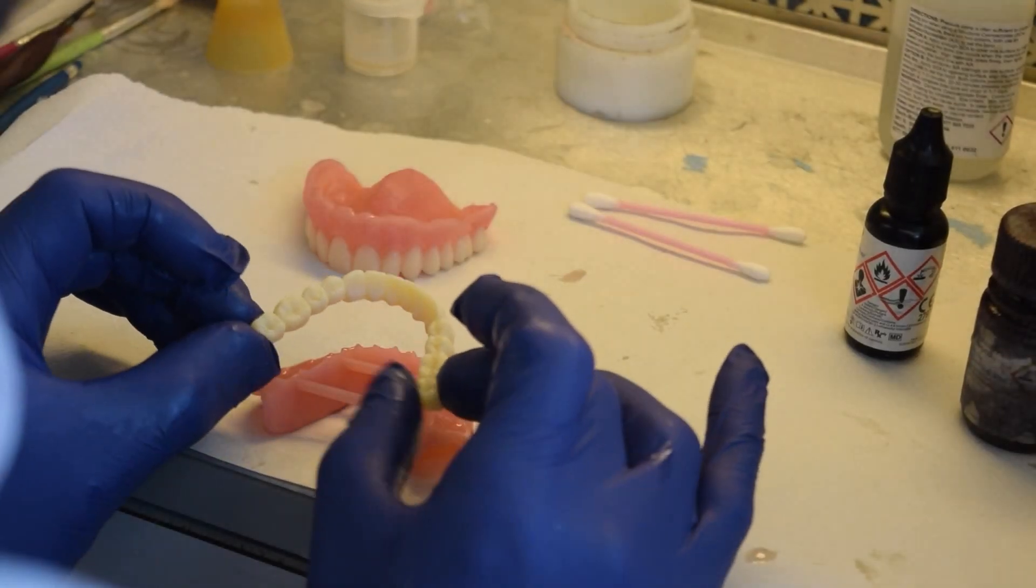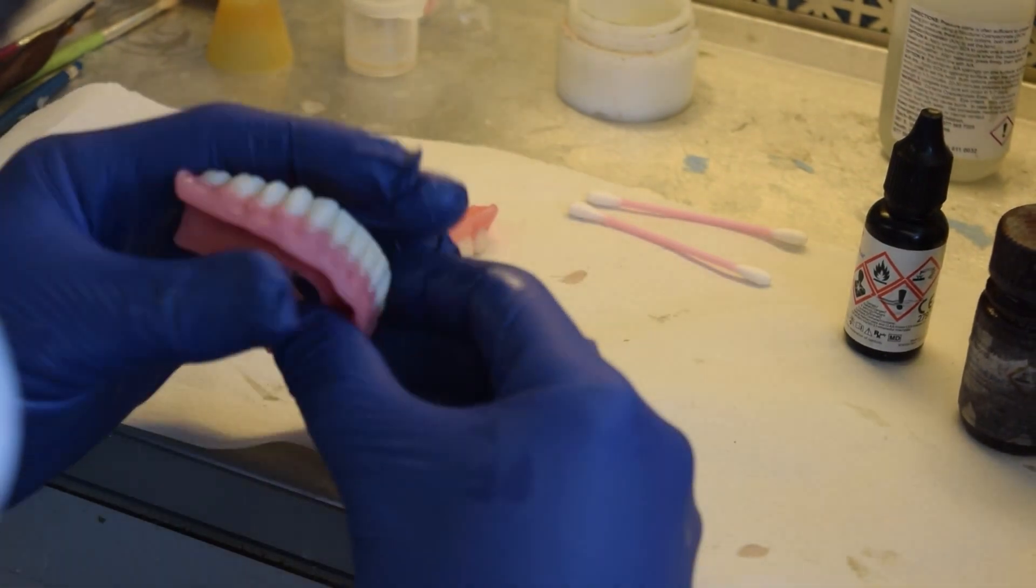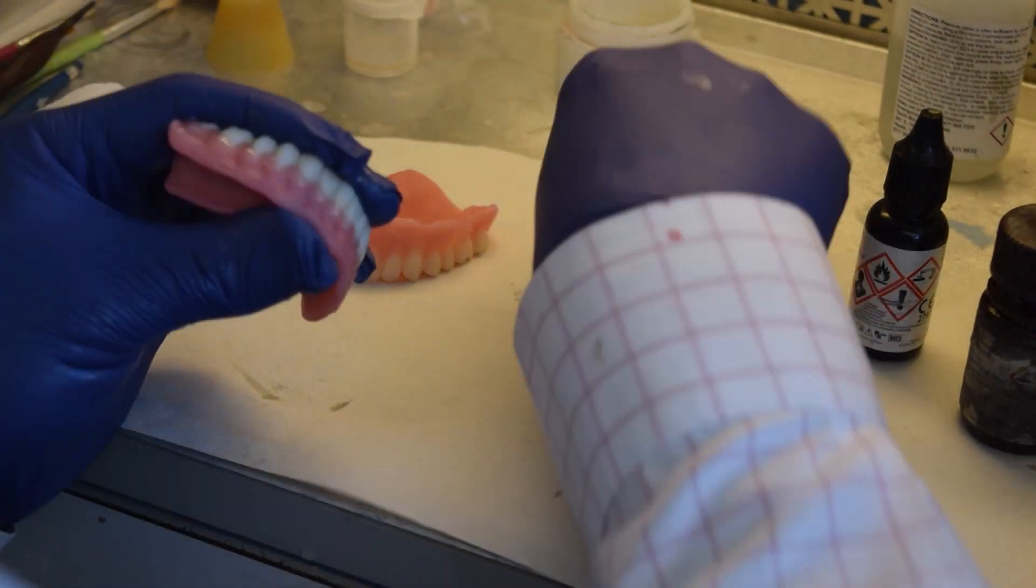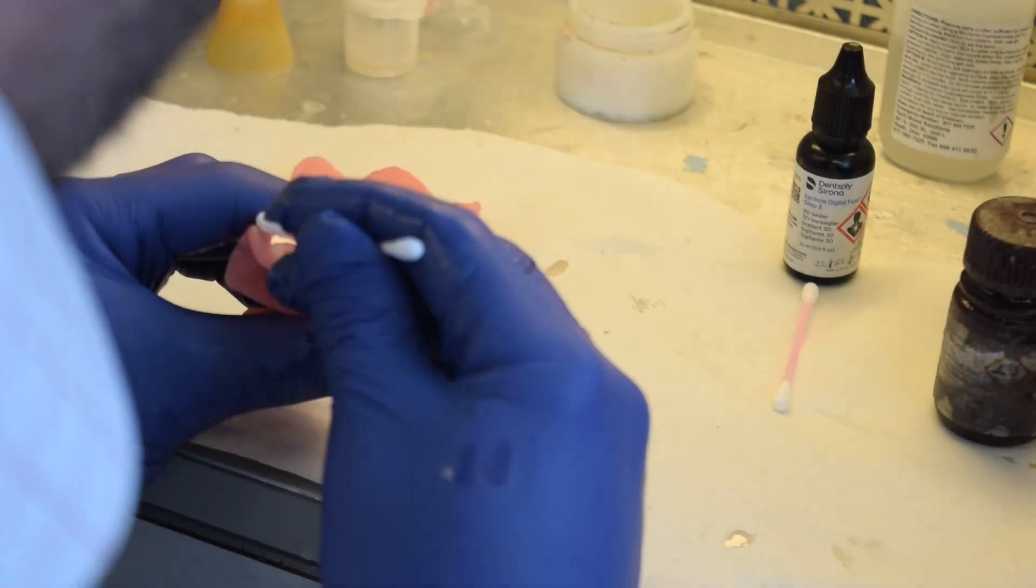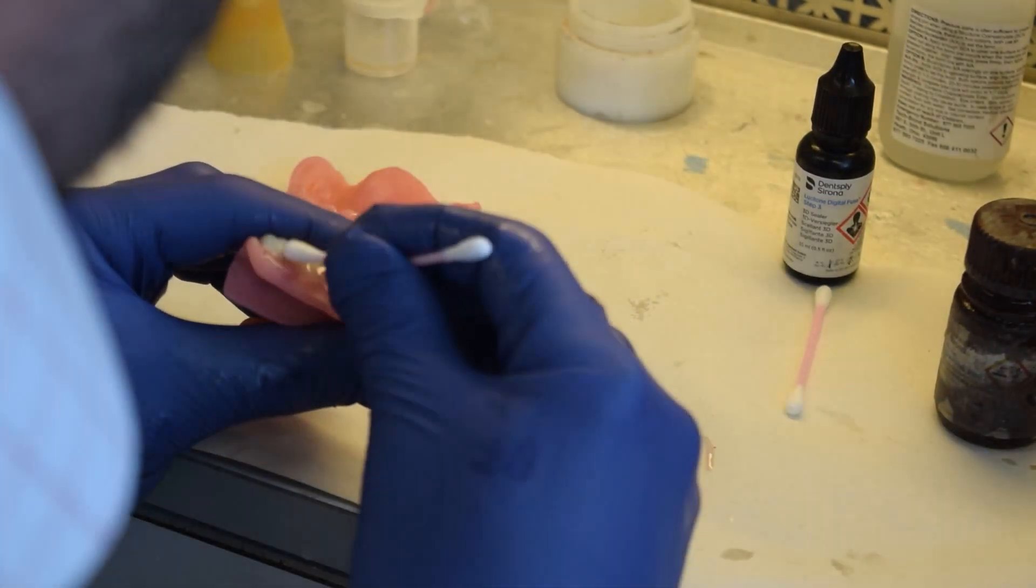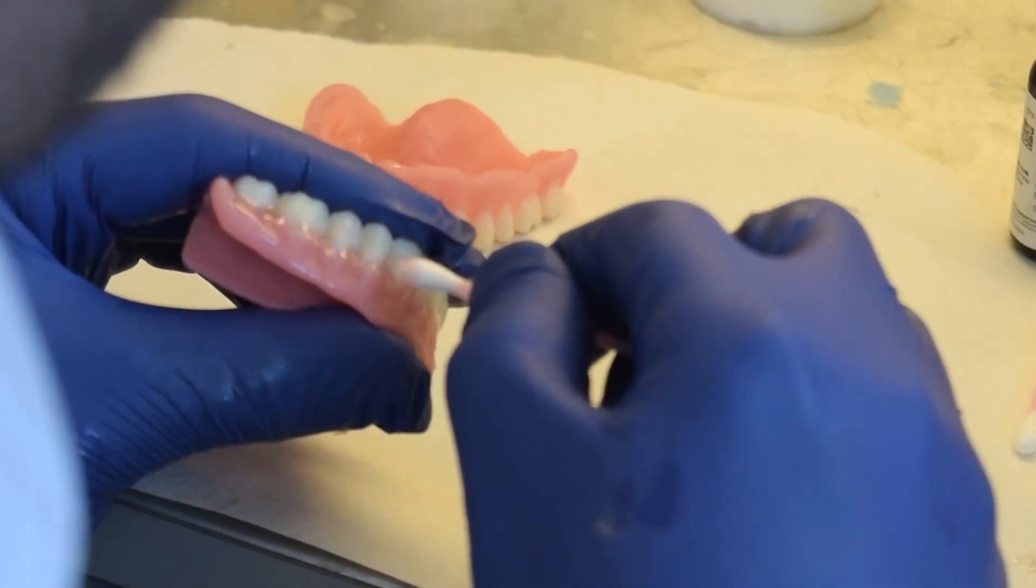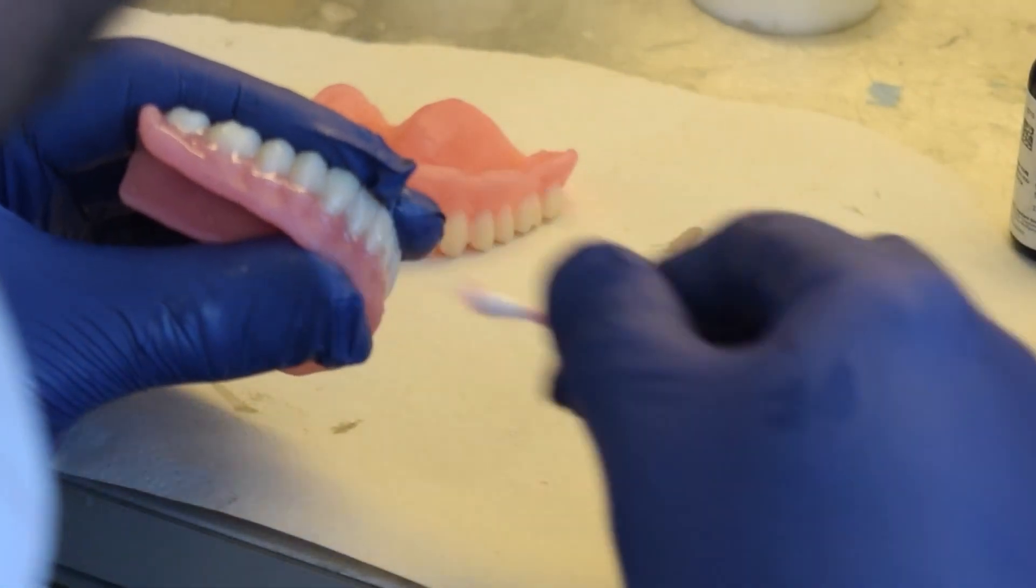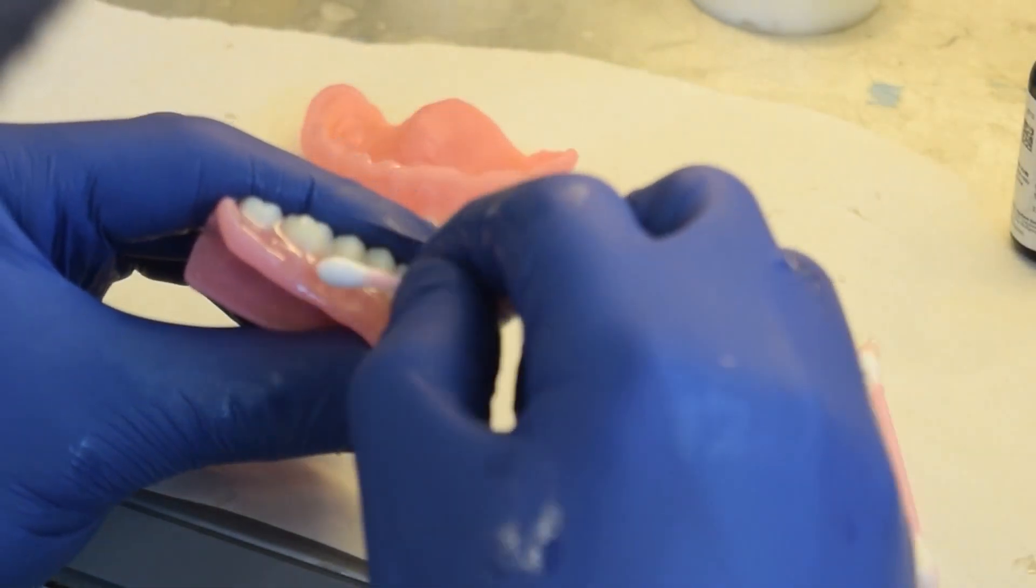The printer resin of the base and teeth is slightly different from a chemical perspective. We use Lusitone digital print resin from Dentsply for the denture base and DEMA print denture teeth resin from Kulser for the teeth. It is important to note that the denture base and denture teeth have not yet been fully cured at this point.